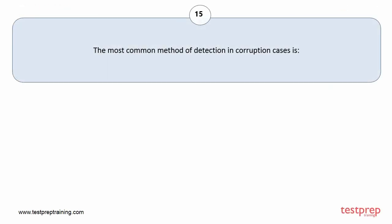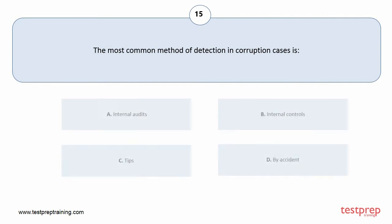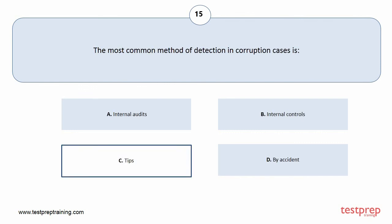Question number 15. The most common method of detection in corruption cases is. Your options are A. Internal audits, B. Internal controls, C. Tips, D. By accident. The correct answer is option C.